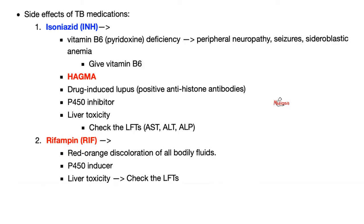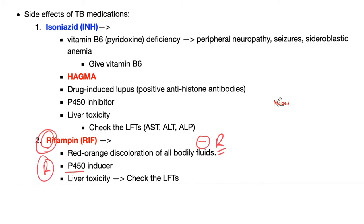As for rifampin — it starts with R, it inhibits RNA polymerase with an R. Side effects include red-to-orange coloration of any bodily fluid. Rifampin with an R will ramp up the P450 enzyme system in the liver, boosting the metabolism of other drugs and rendering them less effective. And since it affects the liver enzyme system, it can lead to liver toxicity.